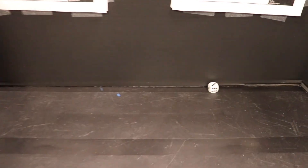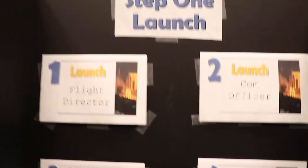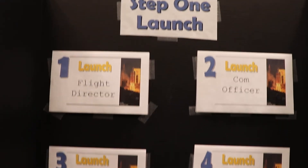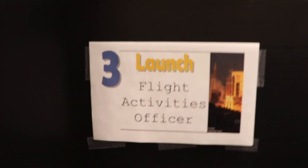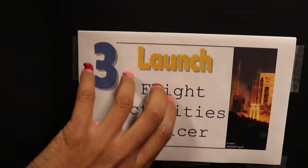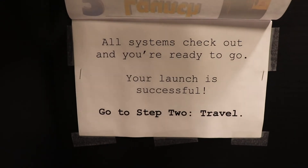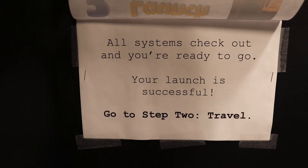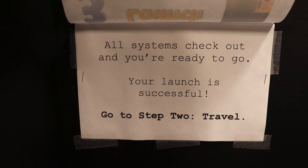Here's my dice. We just landed on three. If you look up here at the board, you can see the different roles. Let's see what we have to do for launch regarding flight activities officer. All systems check out and you're ready to go. Your launch is successful. Now we're ready to go to step two, travel.